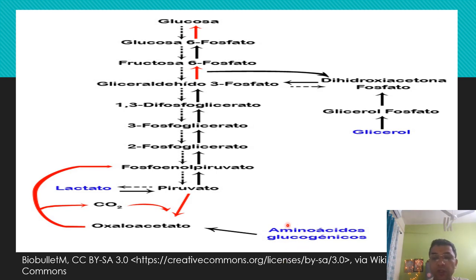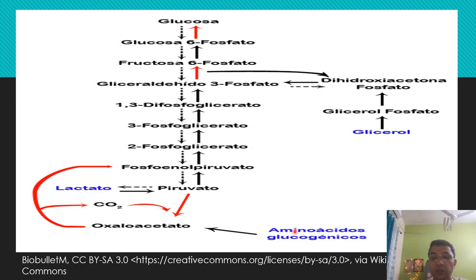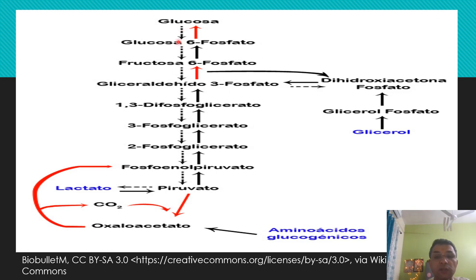These sources include protein — specifically amino acids, the building units of protein — and fat. If you remember glycolysis, the reverse process of glycolysis is known as gluconeogenesis. Here is a simple diagram without enzymes; in the second part I will tell you which enzymes are involved and what the key steps are.